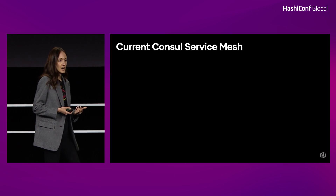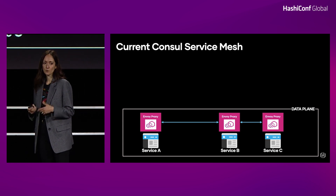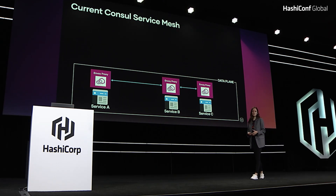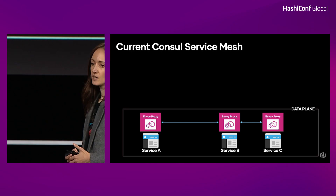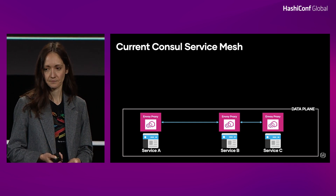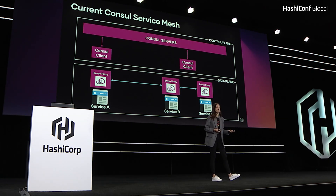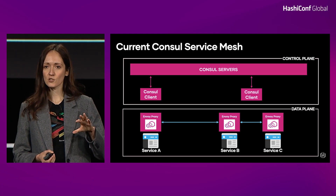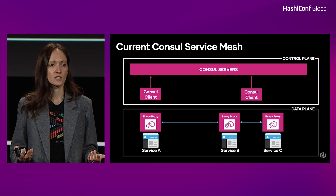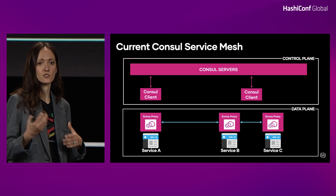Now I want to look at Consul service mesh. The data plane for Consul looks very similar to a generalized service mesh — you have your services and your proxies running alongside them. The specific thing here is that Consul uses Envoy to route that traffic. The Consul control plane consists of two components: Consul servers and Consul clients. Consul servers are like your database for Consul — they store important information about your services and service mesh configuration because they have persistent state. Consul clients then talk to servers to get that information.